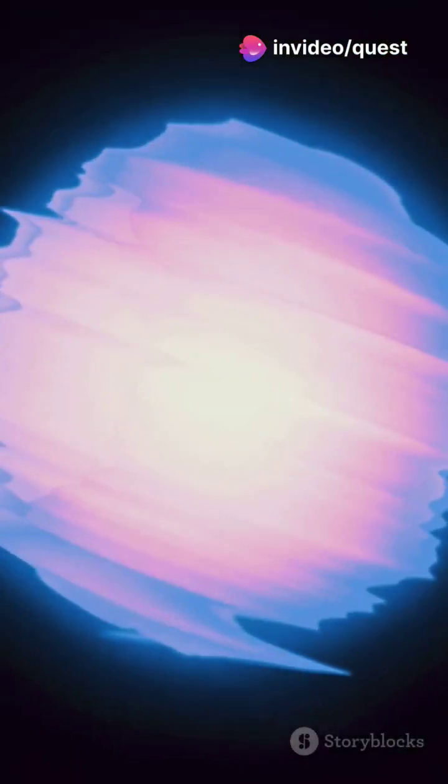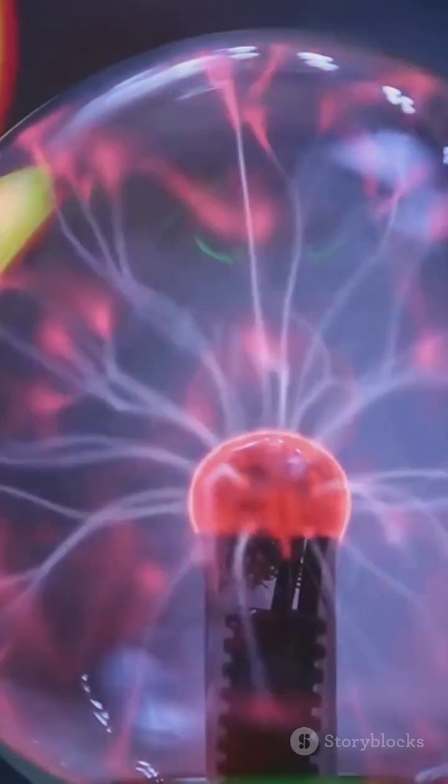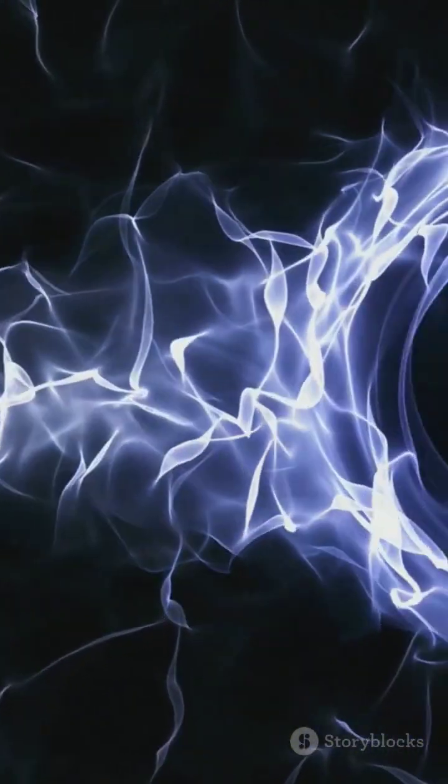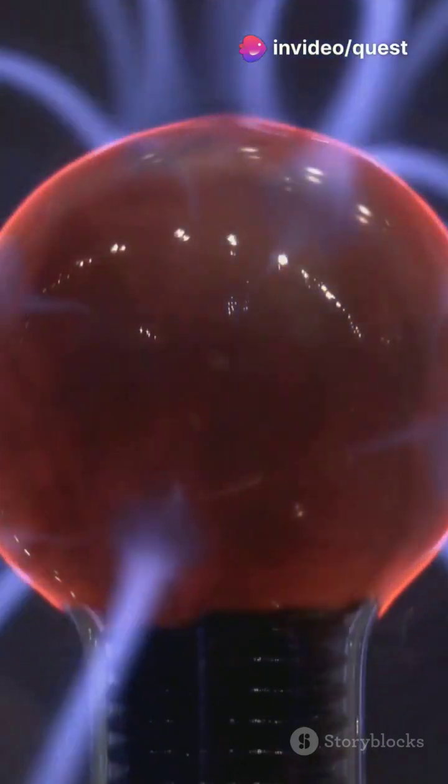So, what exactly is plasma? It's a hot, ionized gas with free electrons and ions moving around. Think of it like a soup of charged particles. This makes plasma conduct electricity and generate magnetic fields.